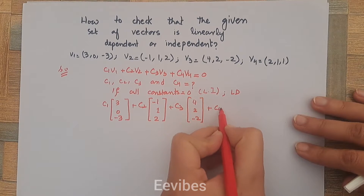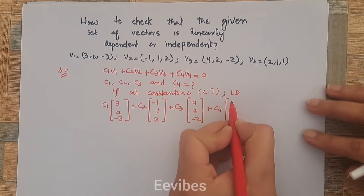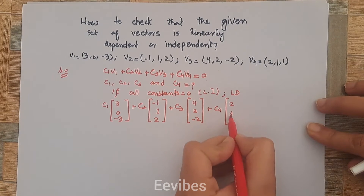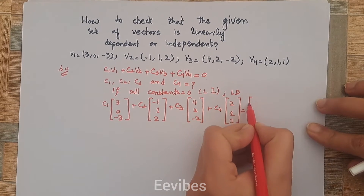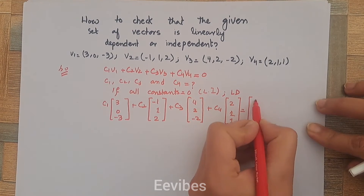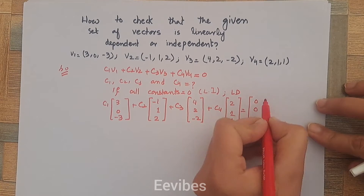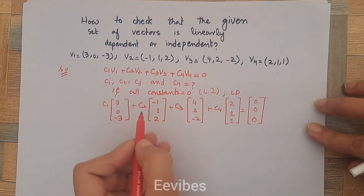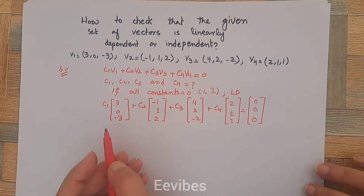The last vector is v4 whose components are (2, 1, 1). On the right-hand side we write the zero vector, and its entries will be equal to the number of rows in the column vectors.